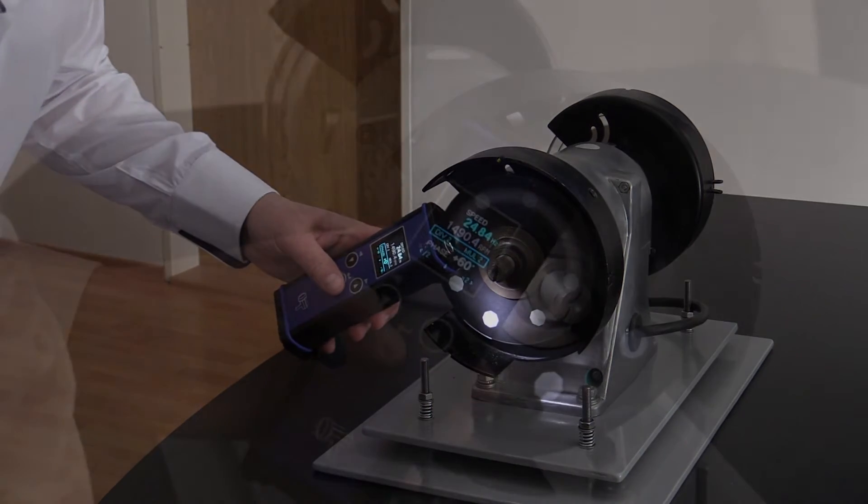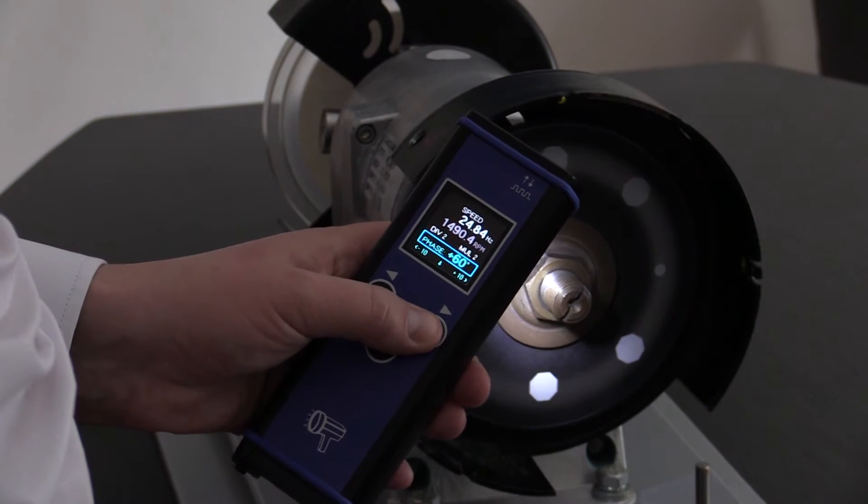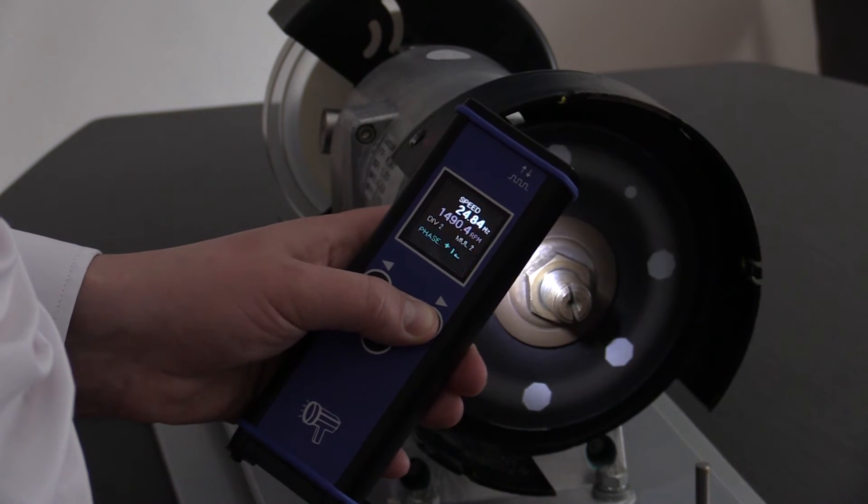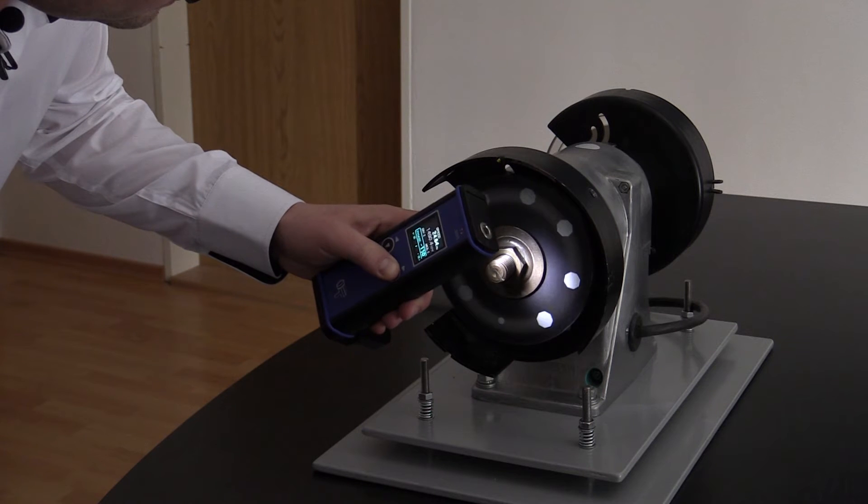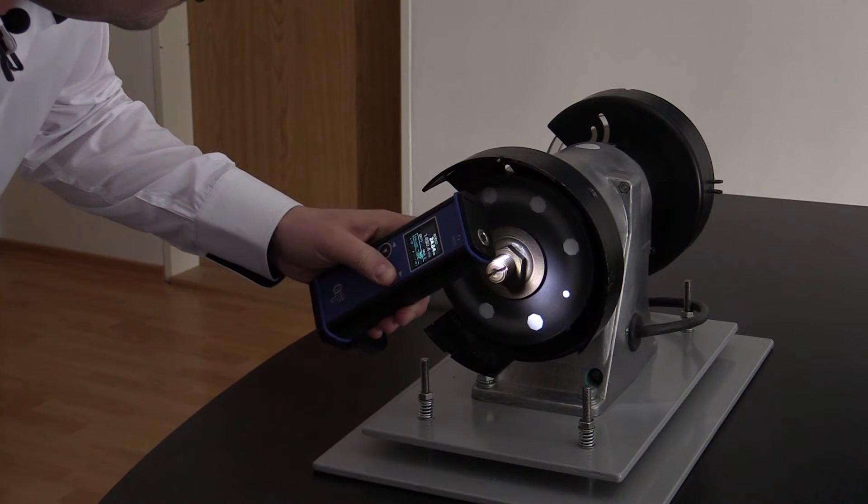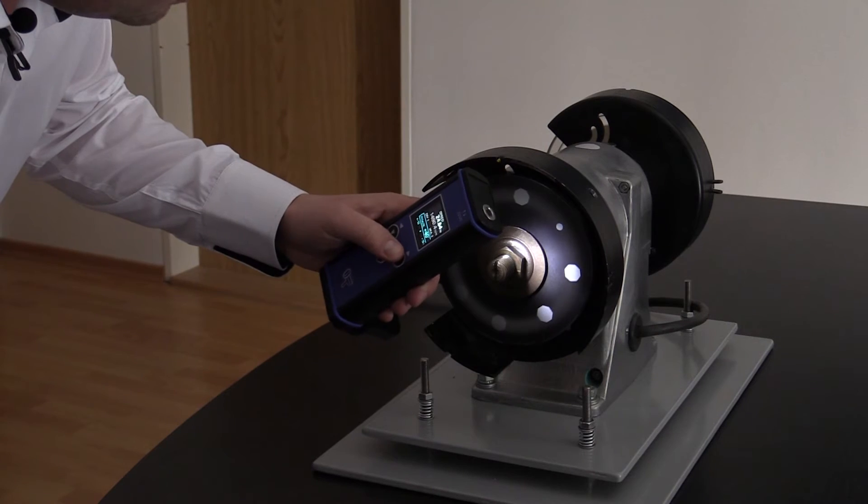There's a phase shift function which allows me to turn, for example, the coupling and I can check bolts on it. Here I'm missing some bolts.